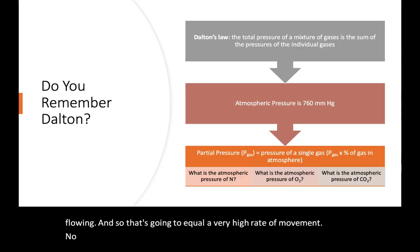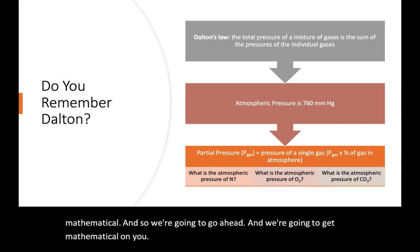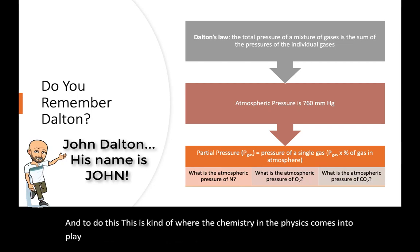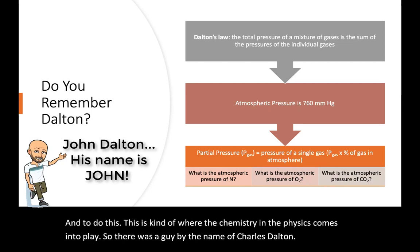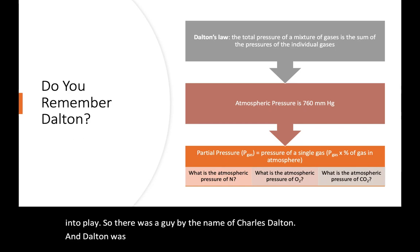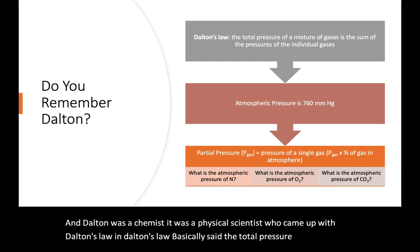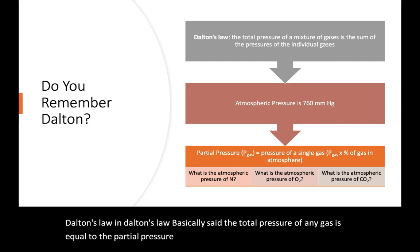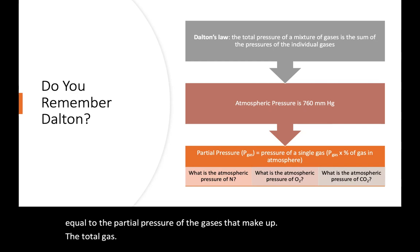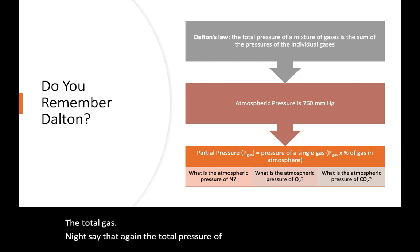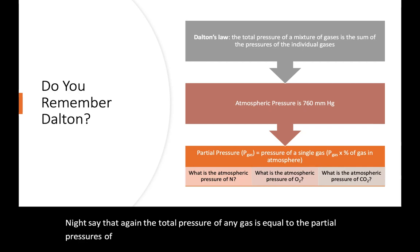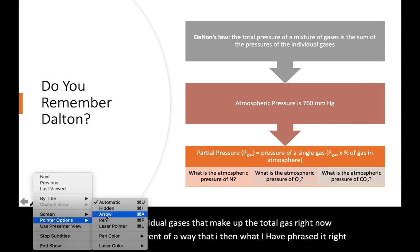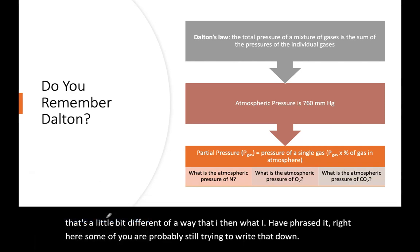To understand this a little more we have to get mathematical. This is where chemistry and physics come in. There was a scientist named John Dalton who came up with Dalton's Law. Dalton's Law basically says the total pressure of any gas is equal to the partial pressures of the individual gases that make up the total gas.